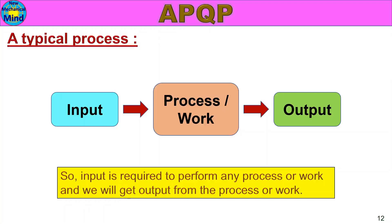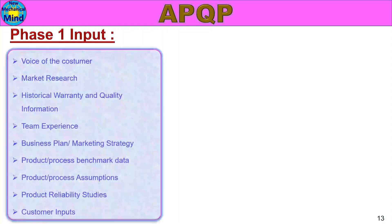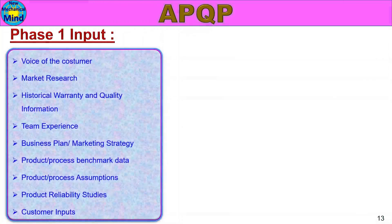The process flow from APQP covers all inputs and outputs across each phase. Phase 1 inputs include: team experience, business plan or marketing strategy, product or process benchmark data, product or process assumptions, product reliability studies, and customer inputs.